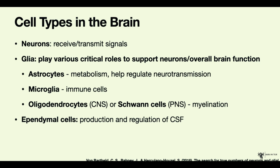Finally, ependymal cells are also found in the brain. These cells are responsible for producing and regulating cerebrospinal fluid, which circulates within the ventricles as we saw in the last lecture on neuroanatomy.